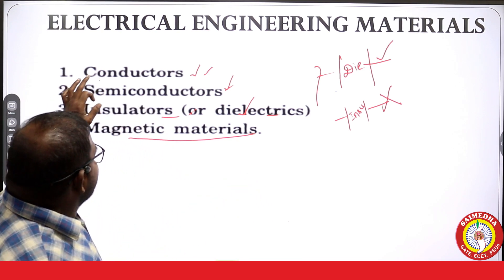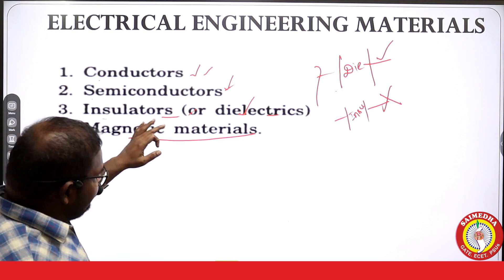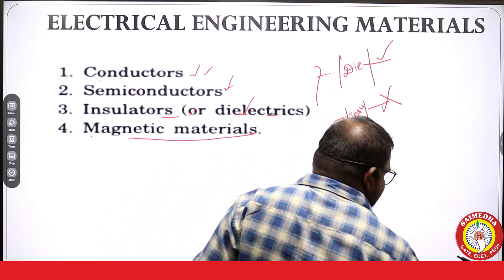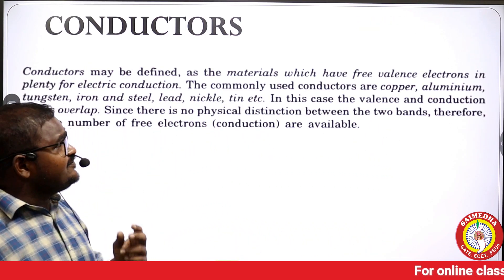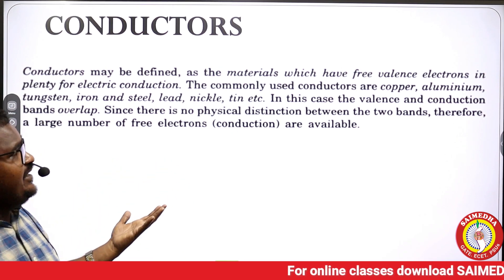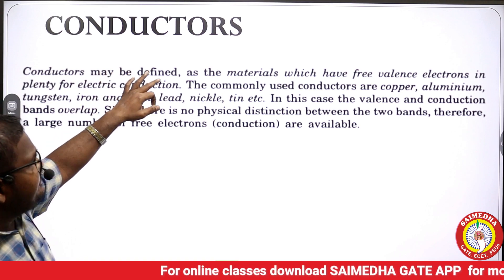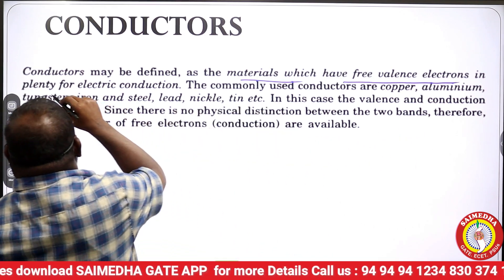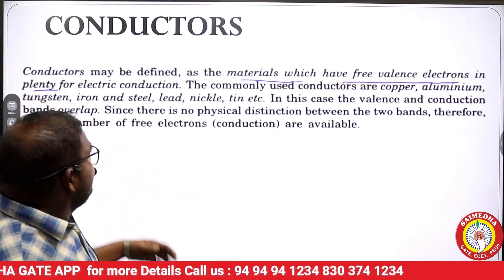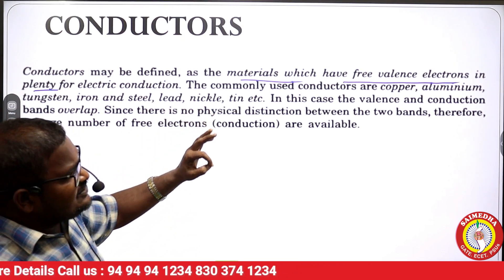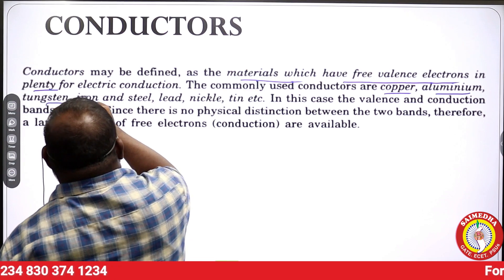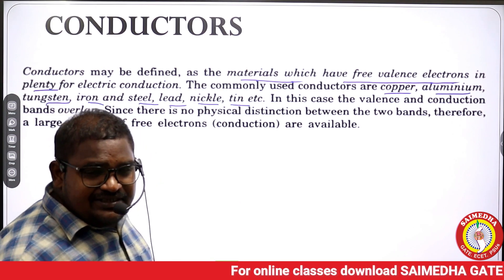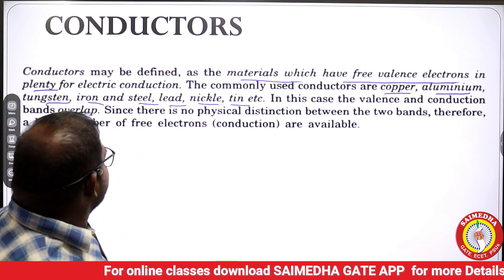So we have conductors, semiconductors, insulators or dielectrics, and magnetic materials. Let us see them one by one. Conductors may be defined as materials which have free valence electrons in plenty — a large number of free electrons for conduction. The commonly used conductors are copper, aluminum, tungsten, iron, steel, lead, nickel, and tin.